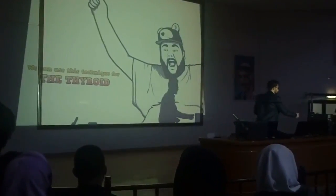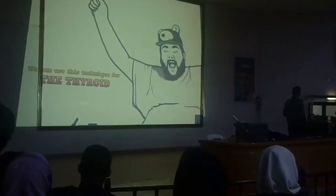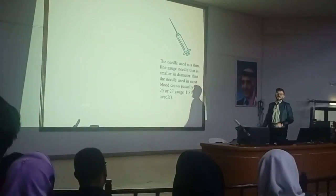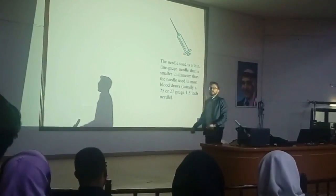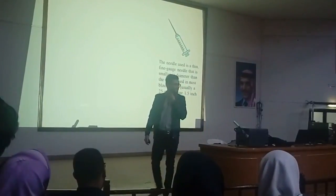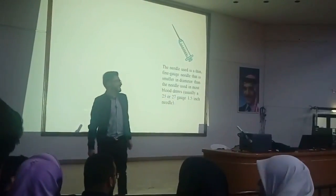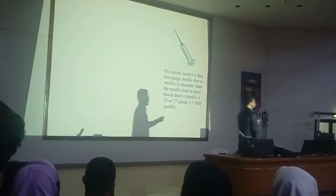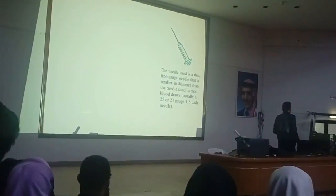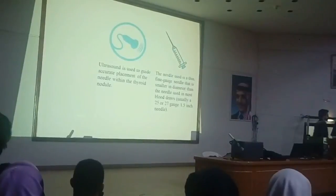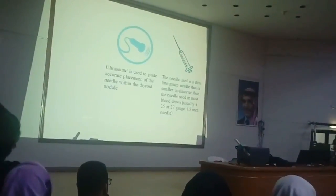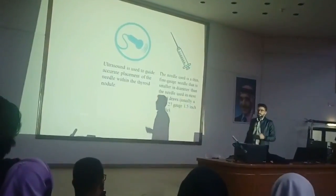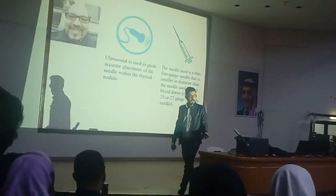We can use this technique in examining the thyroid. To do this, we need three things. The first thing, obviously, is a needle — and a good point to make is that this needle is actually thinner than the needle you use in withdrawing blood. The second thing you need is an ultrasound machine. An ultrasound machine helps you find the accurate place where you have to insert the needle. And the final and most important thing you need is actually a good pathologist.